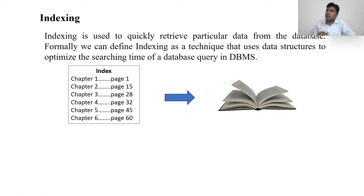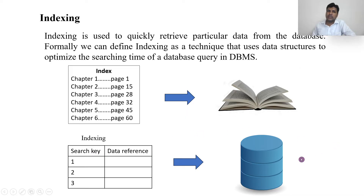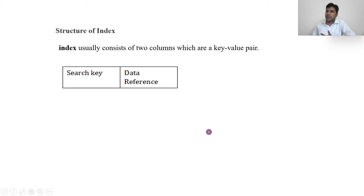To save the search time, we use an index. For example, if we are using indexing, we can easily search data in the database — same as a book has an index. We have indexing which will help us to search data files easily. This is the actual concept of indexing. Now let us move to the types of index we have.